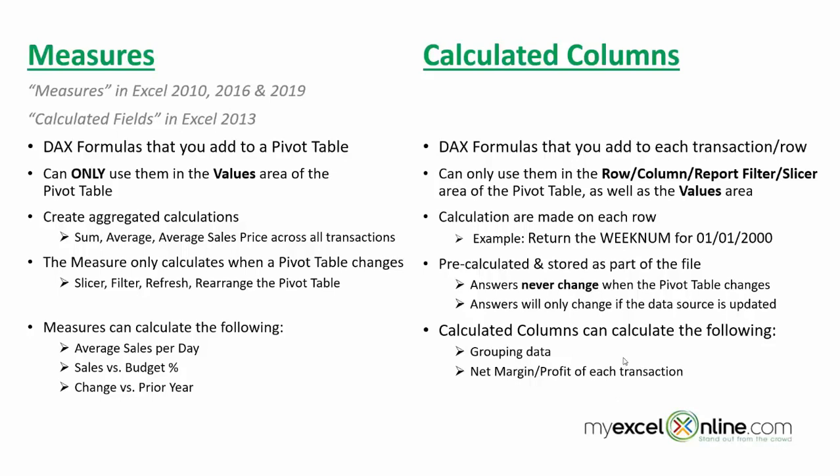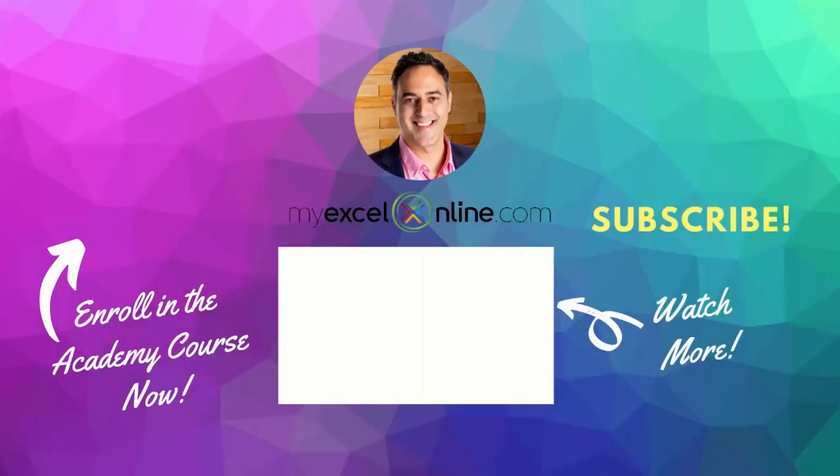So two different scenarios — Measures and Calculated Columns. It depends on what your result is and what values you want to get out of your data. Either one is useful, but Measures are more powerful because as your pivot table changes, the measure changes — and that is a very powerful analysis tool.